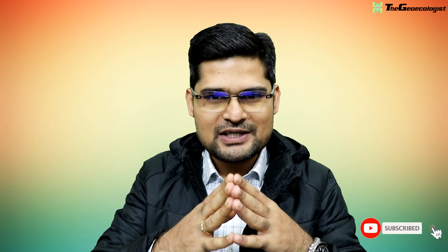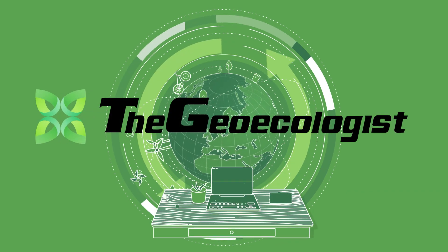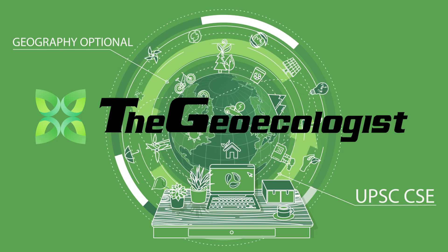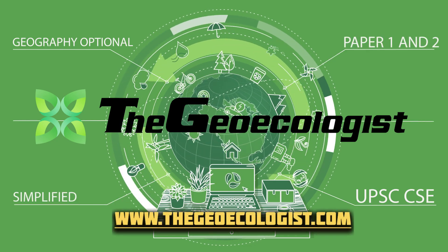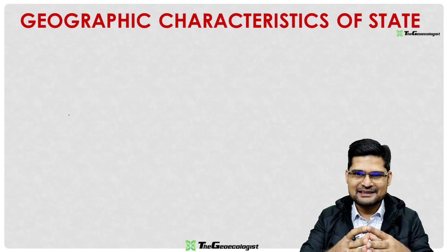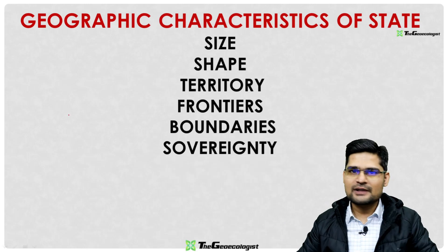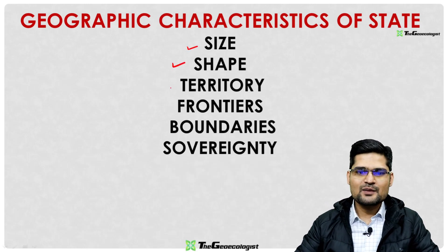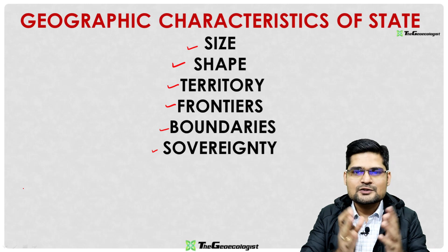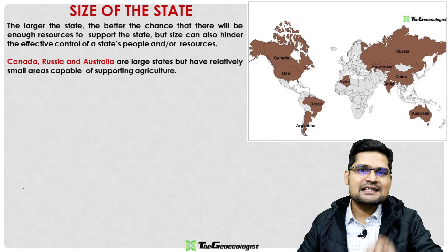In this session on political geography, we are going to learn about the various geographical characteristics of a state — for example, size of a state, shape, territoriality. We'll also look into boundaries and frontiers and the differences between them, and at the end we'll look into the sovereignty factor. Don't forget to subscribe and share the videos.